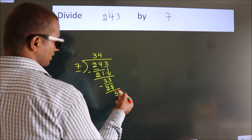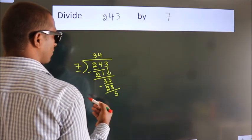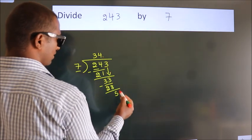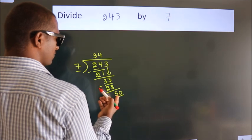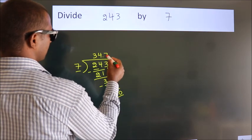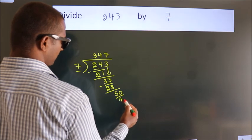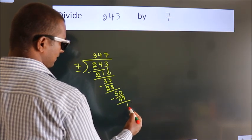After this, no more numbers to bring it down. So what we do is we put dot, take 0. So 50. A number close to 50 in the 7 table is 7 sevens, 49. Now we subtract. We get 1.